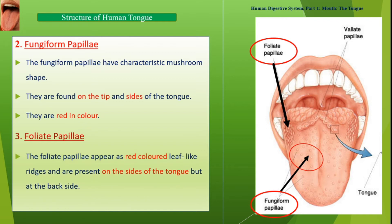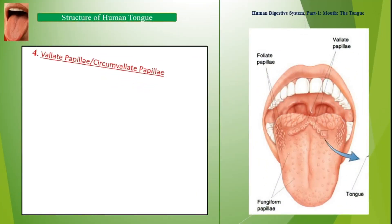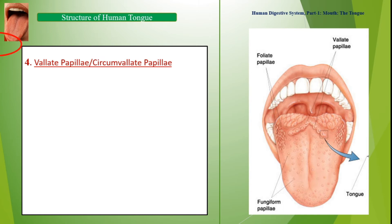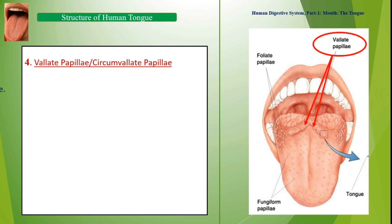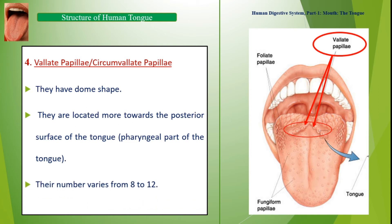Foliate papillae appear as red-colored, leaf-like ridges. They are present on the sides of the tongue, located more towards the posterior surface — that is, towards the pharyngeal part of the tongue. Their number varies from 8 to 12.